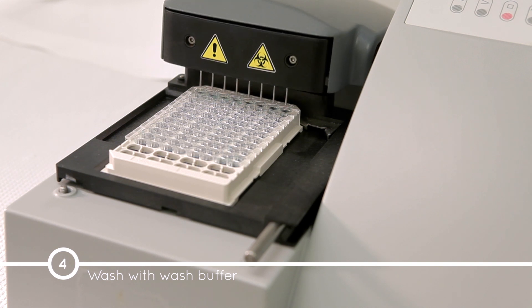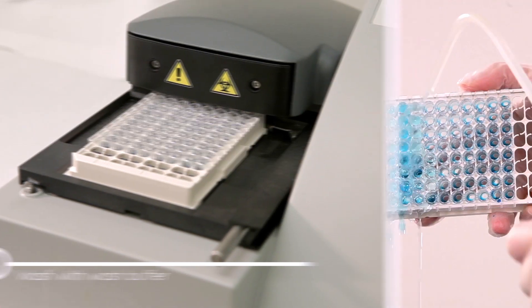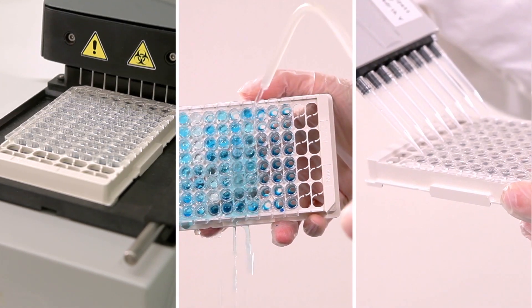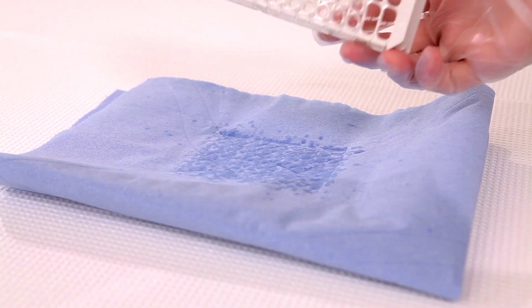Alternatively, the plate can be washed manually using a squirt bottle or a multi-dispensing pipette. After the final wash, invert and tap the plate firmly against absorbent paper.